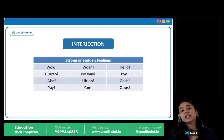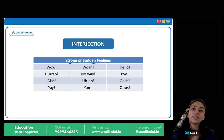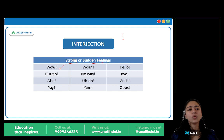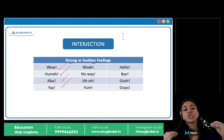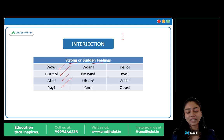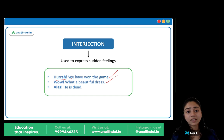And last is interjection. An interjection is any word which is used to express a strong, sudden feeling. An interjection is always followed by an exclamation mark. Words like wow, hurrah, hurray, alas, yeh, no way, uh-oh, yum, hello, bye, gosh, oops — sare interjections hai. 'Hurrah, we have won the game!' 'Wow, what a beautiful dress!' 'Alas, he's dead.' These are your interjections.